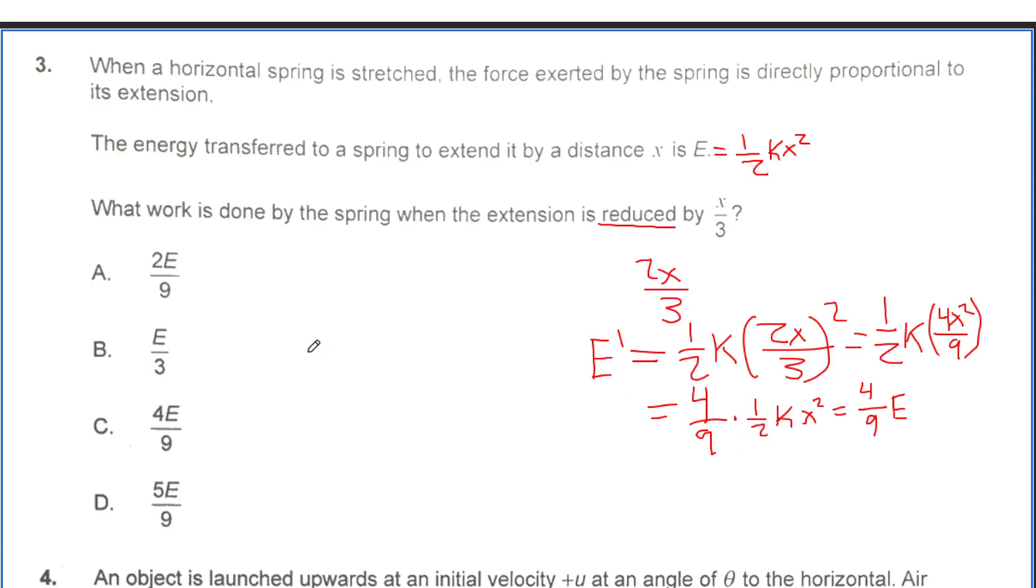But now, this isn't the answer quite yet. I did make that mistake earlier, but it was pointed out to me that it's kind of tricky, but it's asking for the work done by the spring when the extension is reduced. So, it's the energy before of E minus this 4 over 9.